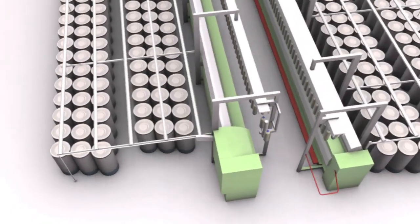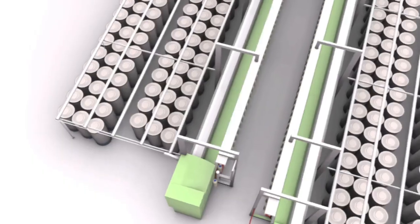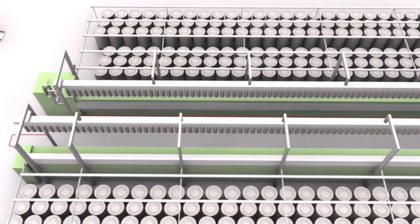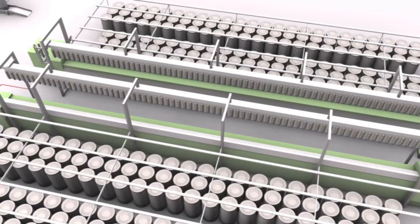The roving frame now creates a roving from the draw frame sliver. The slivers are refined in the drafting system and twisted slightly to strengthen it to roving.